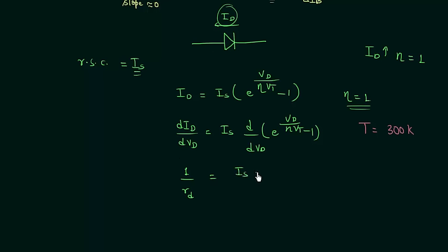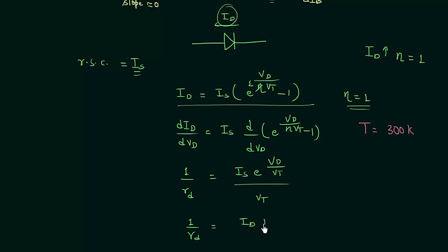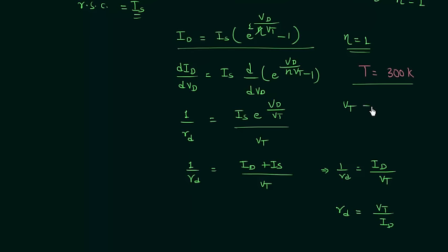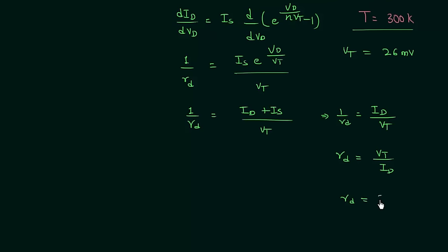After differentiation, 1/R_d = I_S · e^(V_D/V_T) / V_T. Since I_S · e^(V_D/V_T) = I_D + I_S, we get 1/R_d = (I_D + I_S) / V_T. Because I_S is very small compared to I_D, we neglect it, giving 1/R_d = I_D / V_T, or R_d = V_T / I_D. At room temperature, V_T = 26 mV, so R_d = 26 mV / I_D.